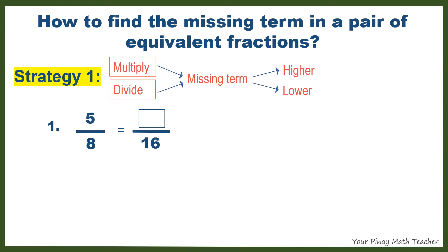For example, 5 eighths is equal to blank over 16. The missing term is in its higher term because 16 is greater than 8. This implies that you have to multiply 8 by a certain number to get 16, and that number is 2. So multiply also 5 by 2 to get the missing term which is 10.